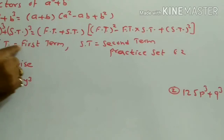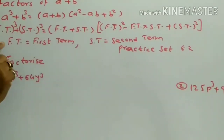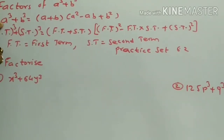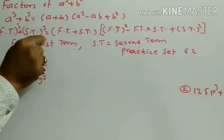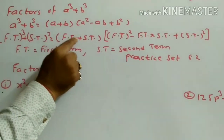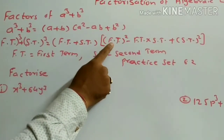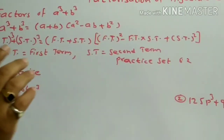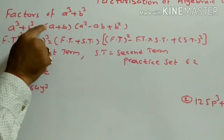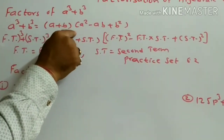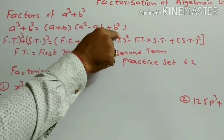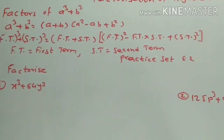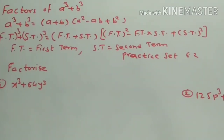If you consider a as the first term and b as the second term — FT means first term, ST means second term — then first term cube plus second term cube equals bracket first term plus second term into bracket square of first term minus first term into second term plus square of second term. That is a cube plus b cube equals a plus b into bracket a square minus ab plus b square. Using this formula we solve the examples of practice set 6.2.